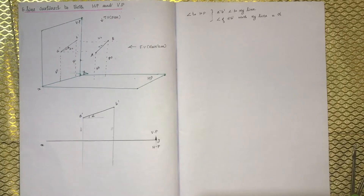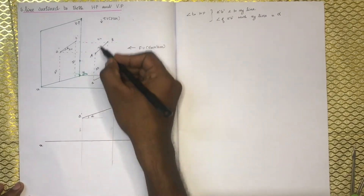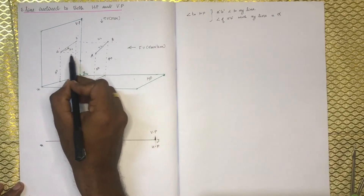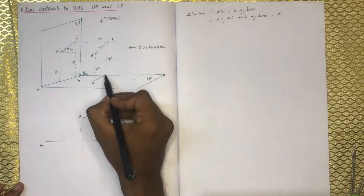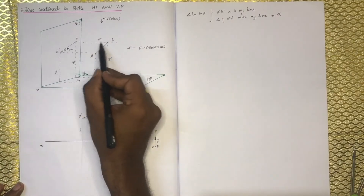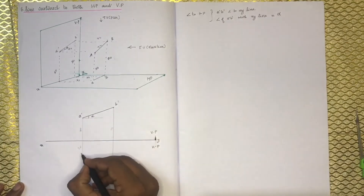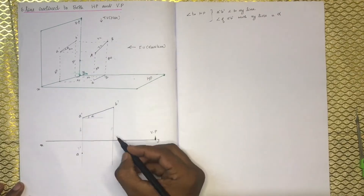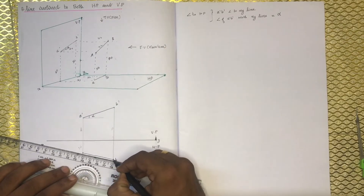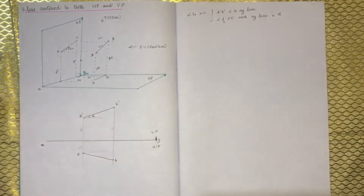In the top view, you can see A, B, and the plan. You can see this distance. Point A is 50mm and point B is 50mm. We will get the plan. We will have the inclination of the plan with the XY line. This is 50.